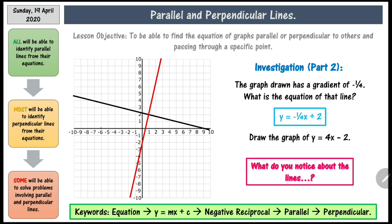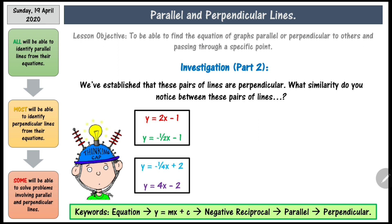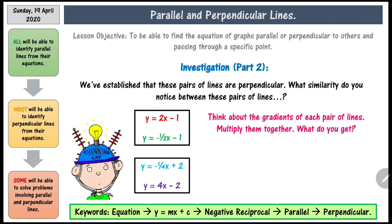What do you notice about the lines? Based on what we've just seen, the first box provides equations for the first two perpendicular lines, and the second box provides the equations for the second two perpendicular lines. We've established that these pairs of lines are perpendicular — what similarity do you notice between them? The similarity is that if you multiply the gradients together, you would actually get minus 1.